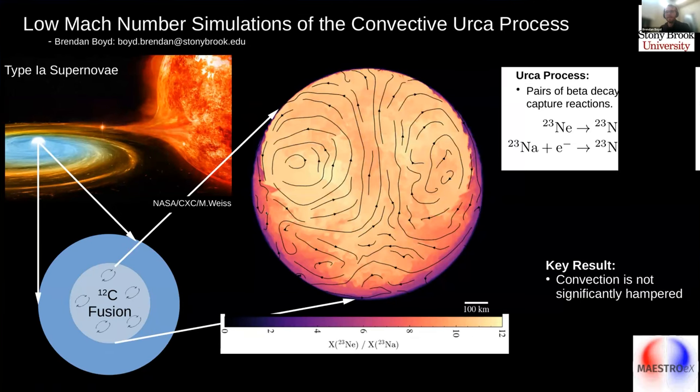Hi, my name is Brenton Boyd. I'm with the Nuclear Astro Group at Stony Brook University, and my research primarily pertains to Type 1a supernovae.